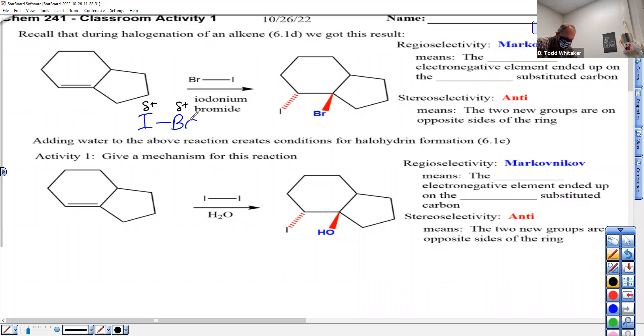The more electronegative element, which is bromine, ended up on the more substituted carbon. That's a good way to remember the regioselectivity when it's called Markovnikov. I know it's spelled Markovnikov but it's Russian. More substituted means the bromine ended up on the tertiary carbon, which is a higher number than the iodine which ended up on the secondary carbon. Tertiary is more substituted than secondary.